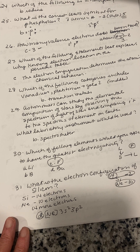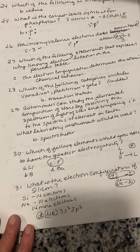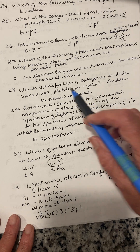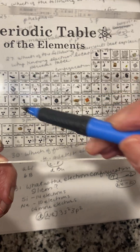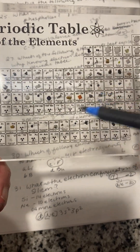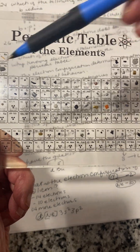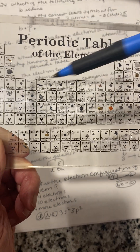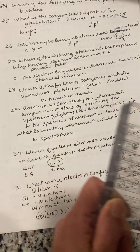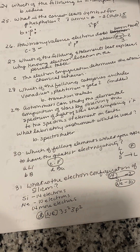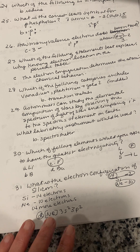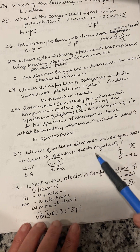Number twenty-eight: which of the following categories includes vanadium, platinum, and gold? They're all in the middle area of the periodic table. The main group elements are on the sides, and the middle area elements are called transition metals. Gold, silver — they're all in the middle. They're transition metals.